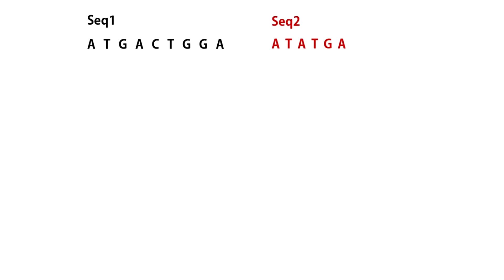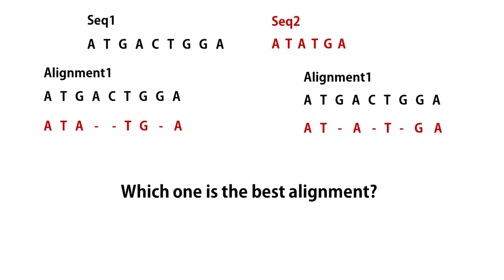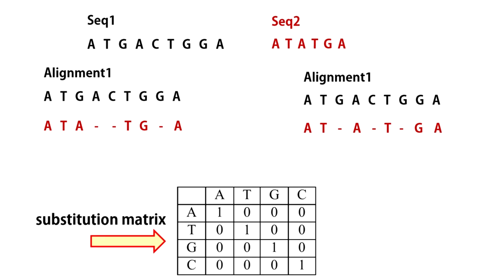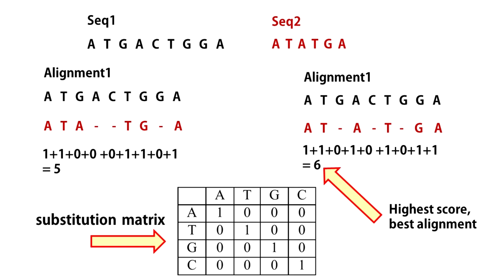Suppose you have two DNA sequences. You can align them in two different ways. Which one is the best alignment? Well, the best alignment is the one that best represents the matches among different characters. So let us define a matching algorithm. If there is a perfect match, such as A matching with A, T with T, G with G, the score is 1, otherwise 0. So following this simple algorithm, these are the scores of the two alignments. The alignment with the highest score is the best alignment.